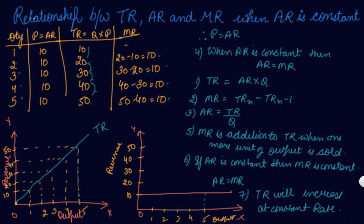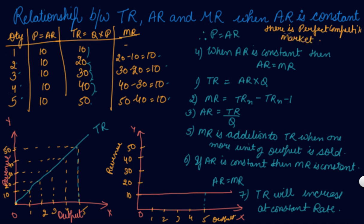So TR will increase at a constant rate. This is the relationship between TR, AR and MR when AR is constant. Note that CBSE can also mold this question as: show the relationship between TR, AR and MR when there is a perfect competition market. So this same explanation applies to perfect competition market as well.